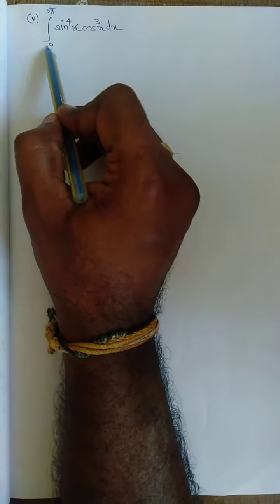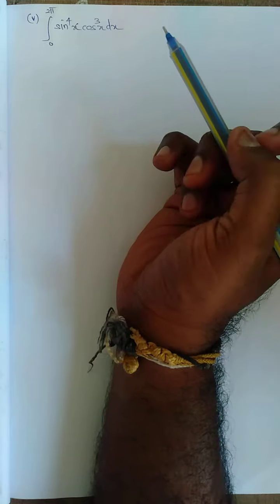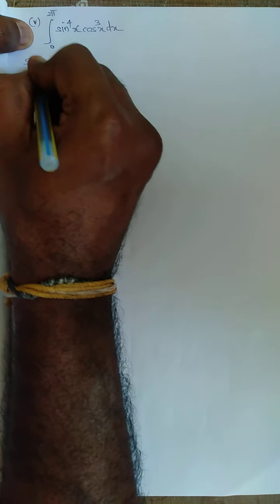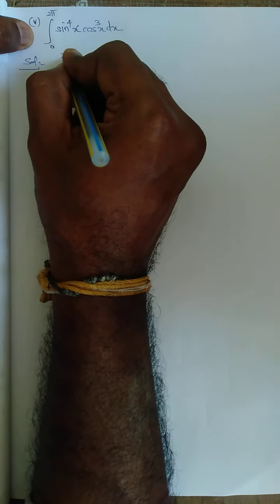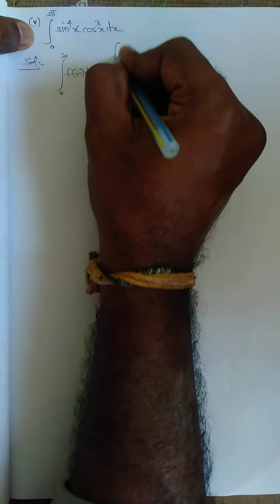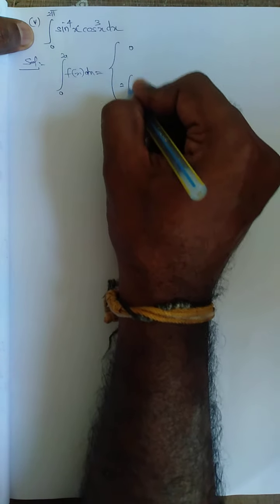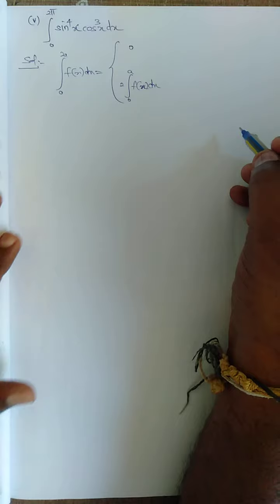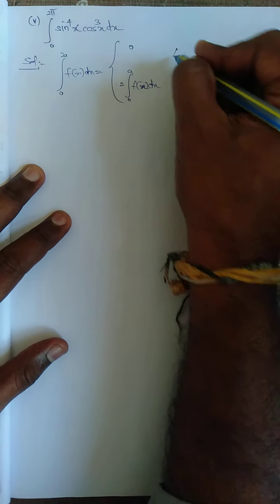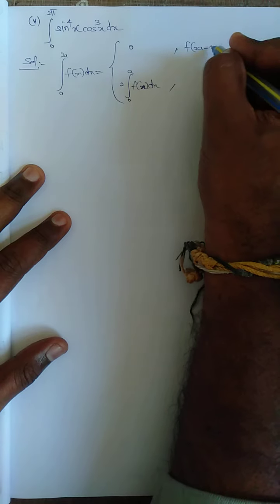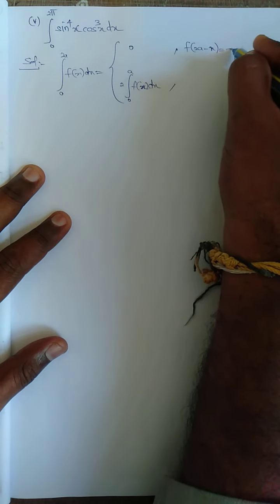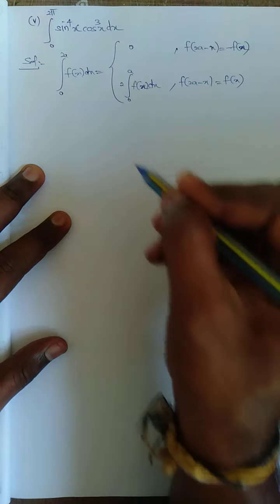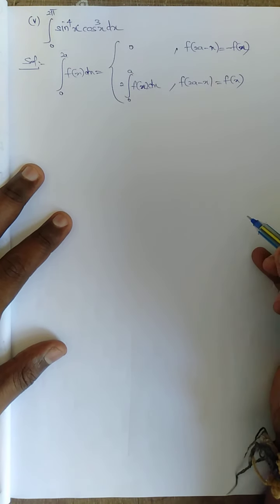In this sum there is no x present and there is no limit also. We need to use the property for ∫₀²ᵃ f(x)dx. The solution: the property states that ∫₀²ᵃ f(x)dx equals 0 if f(2a - x) = -f(x), and equals 2∫₀ᵃ f(x)dx if f(2a - x) = f(x). This property is a must — you need to learn it to solve this sum.